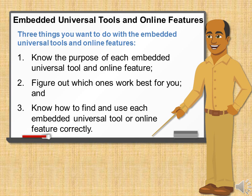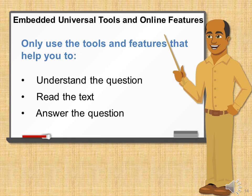There are many embedded universal tools and online features to choose from; however, you probably will not use all of them. Here are some things you need to know: First, know the purpose of each embedded universal tool and online feature. Second, figure out which ones work best for you. And third, for the tools and features you choose to use, know how to find and use them correctly. Only use the tools and features that help you understand the question, read the text, and answer the question.